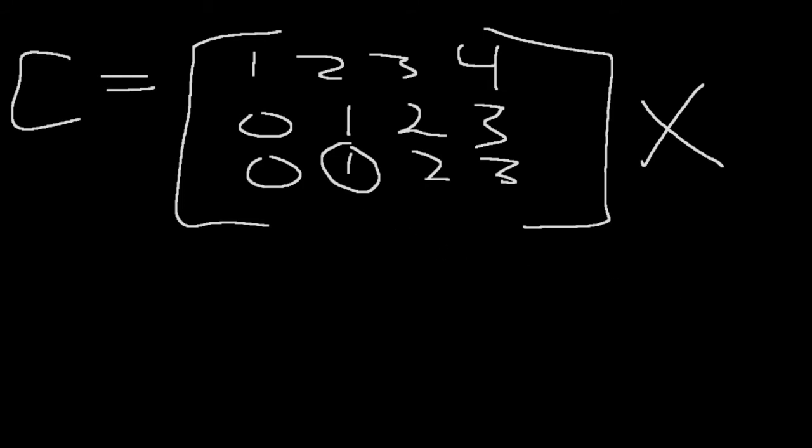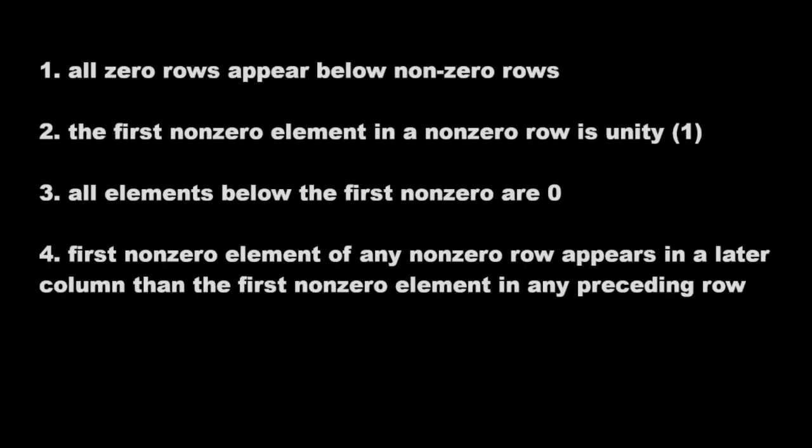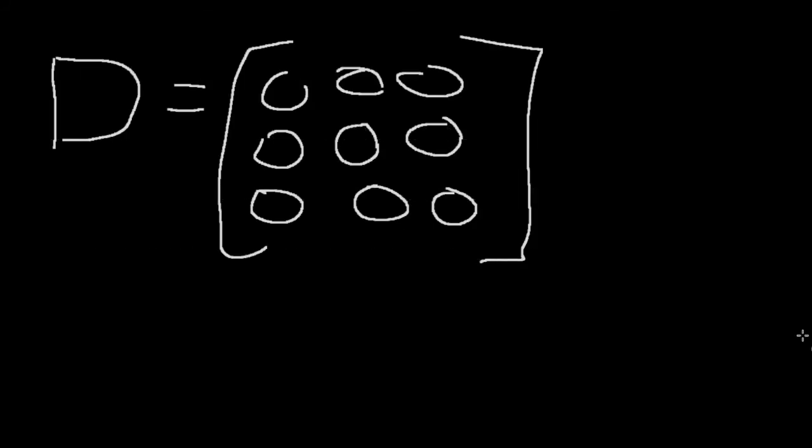And let's do one last example. Matrix D, and this one is going to be, let's just say it's all zeros. Is this row reduced form? And the answer is, let's check. Does it break any rules? All zero rows appear below non-zero rows. Well, we're not breaking that. There are only zero rows. First non-zero element in a non-zero row is unity. Well, we don't have any non-zero rows, so we can't break that. So all zeros is row reduced form.